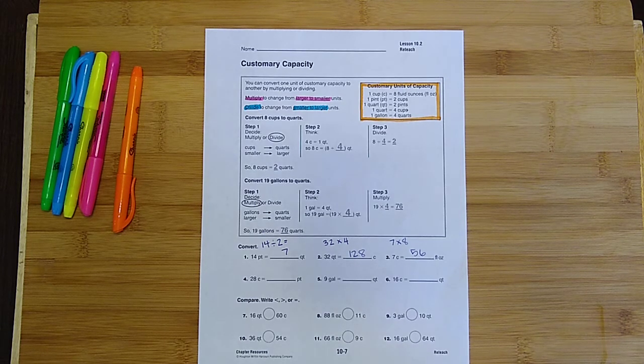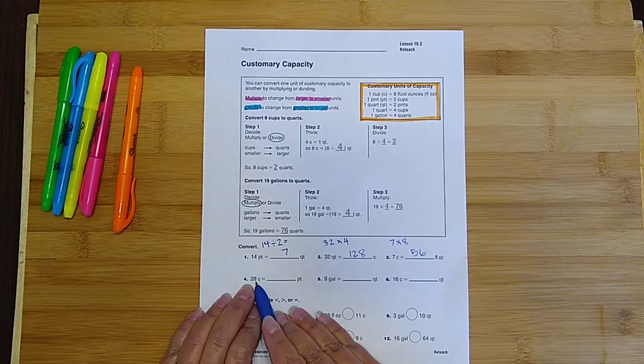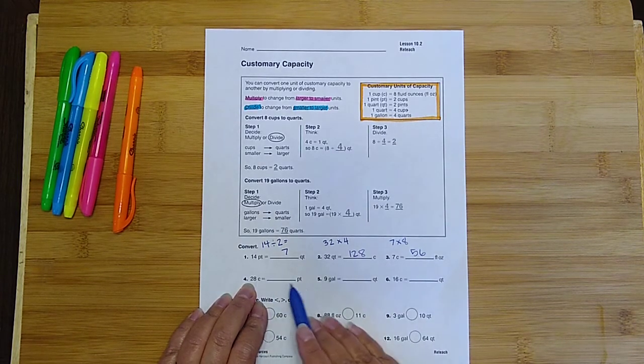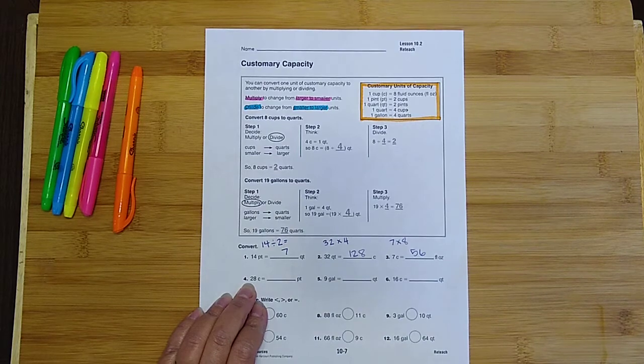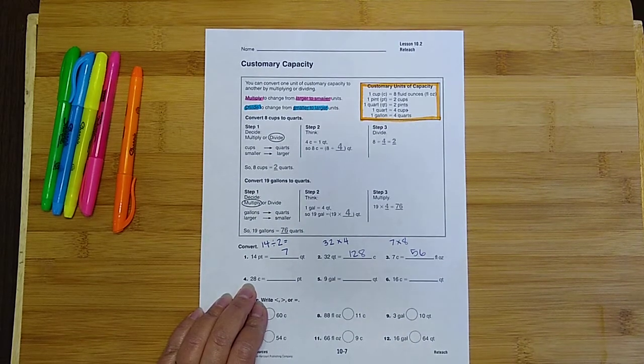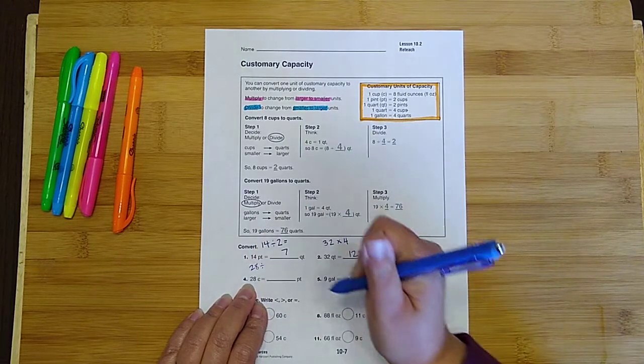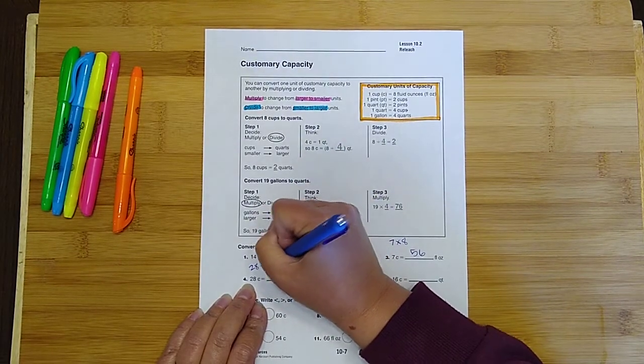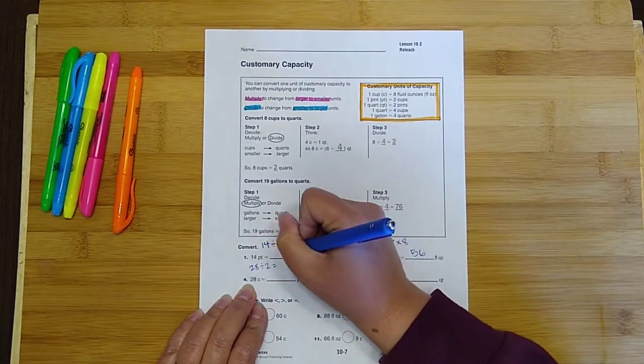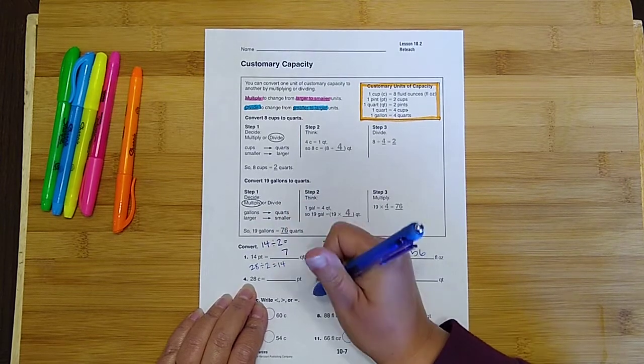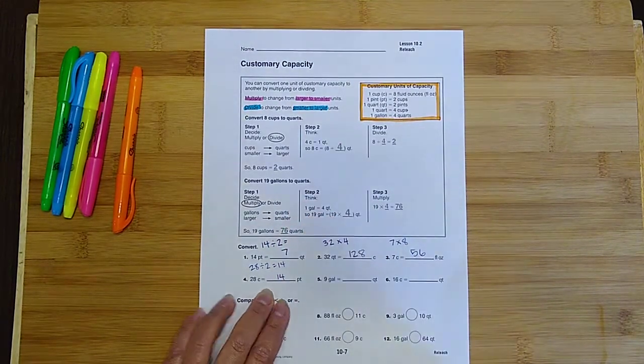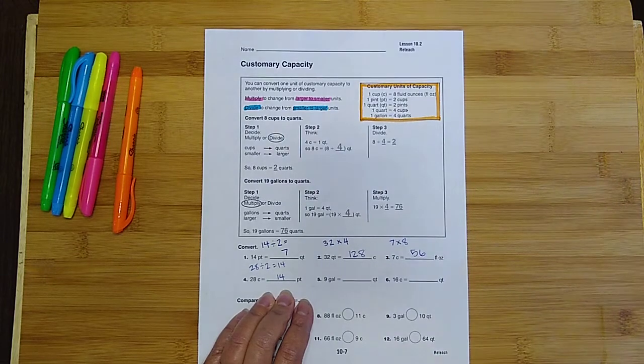Okay, let's see how you did. So we converted 28 cups into pints, and I figured out that we are going to do 28 divided by 2, which equals 14. So you should have had the answer 14 pints for number four.